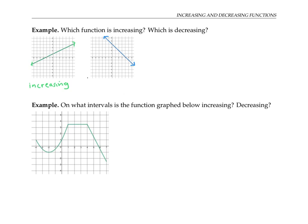This can be written more formally by saying: if x₂ is bigger than x₁ — these are x values — so x₂ is some x value to the right, making it bigger than x₁.